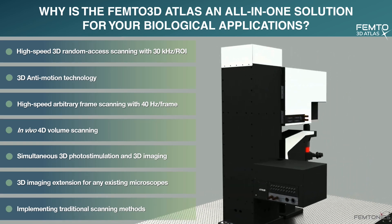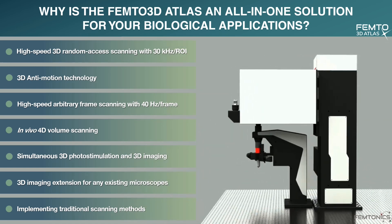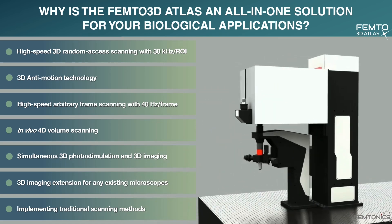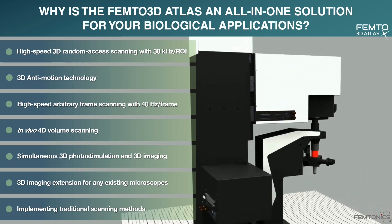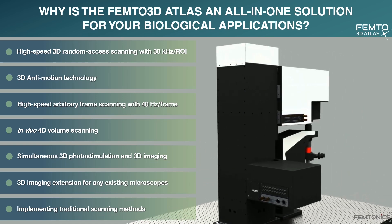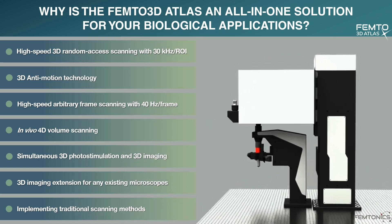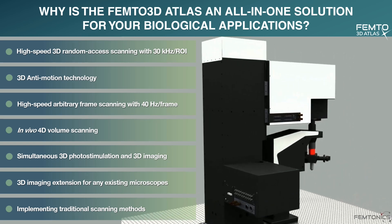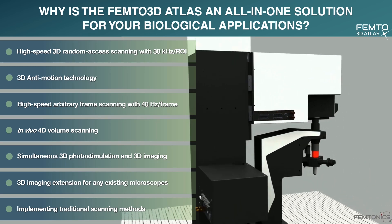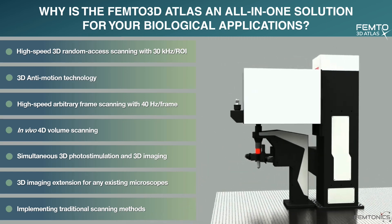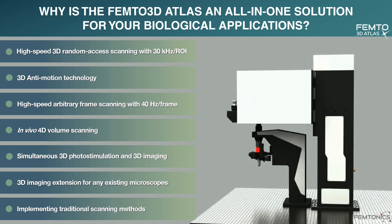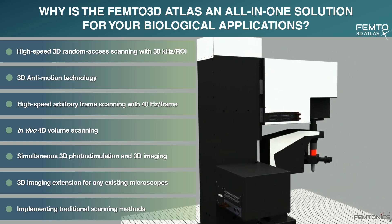With high-speed 3D random access scanning, an astonishing 30 kHz speed can be reached at your region of interest. The 3D anti-motion technology eliminates artifacts arising from the movement of the sample, making the system suitable for the imaging of behaving animals. High-speed arbitrary frame scanning provides 40 Hz per frame scanning speed. Thanks to the acousto-optical technology, the imaged plane can be arbitrarily chosen, tilted, and rotated. In vivo 4D volume scanning allows imaging along the entire length of different cells in different layers for extended periods of time. Using two laser lines, biologically simultaneous 3D photo stimulation and 3D imaging are possible. You can also choose to upgrade your existing upright microscope with this outstanding 3D technology. With Femto3D Atlas, you will have access to the benefits of conventional 2P microscopy and ultra-fast 3D imaging.